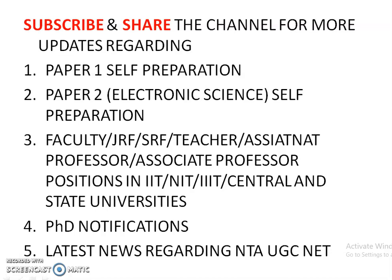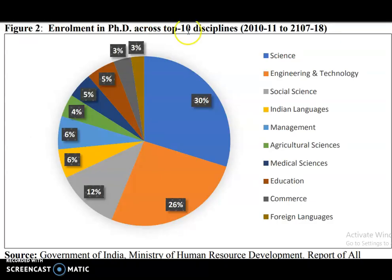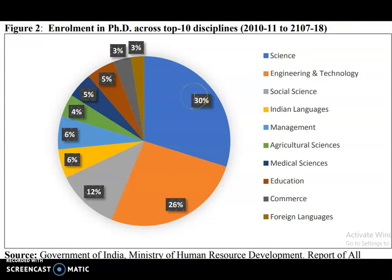Now coming to the content of this video — enrollment in PhD across top 10 disciplines from the 2010-11 academic year to 2017-18. Out of 100, 30% of candidates are registered for the science disciplines — that means physical science, environmental science, and like that. This is the highest percentage among all PhD disciplines. The second highest is engineering and technology at 26%.